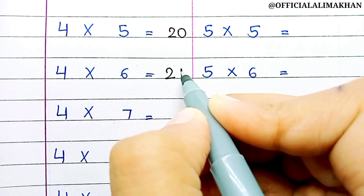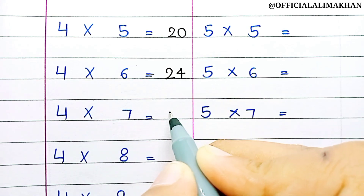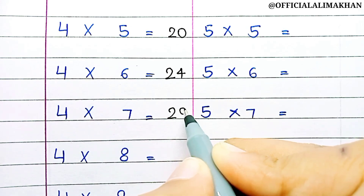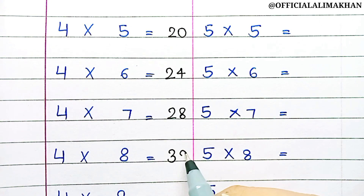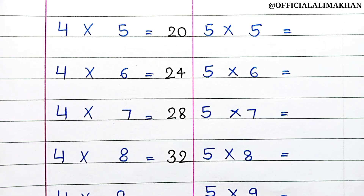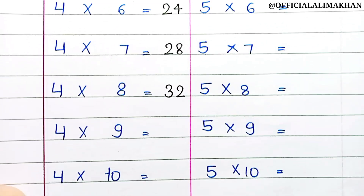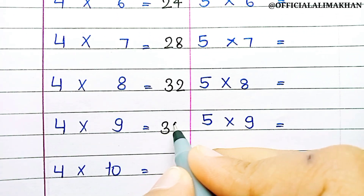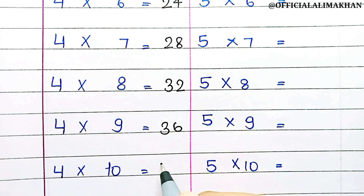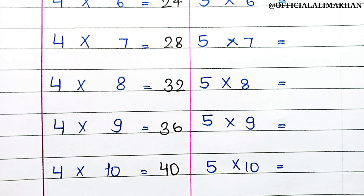4 6s are 24, 4 7s are 28, 4 8s are 32, 4 9s are 36, 4 10s are 40.